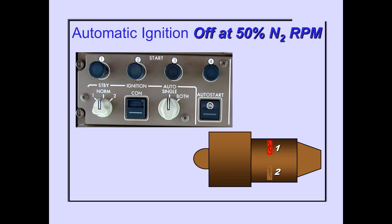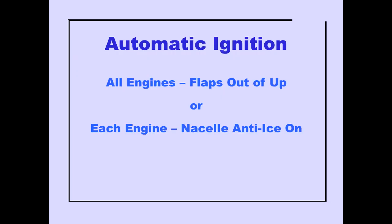Automatic ignition occurs during the engine start cycle until the selected igniter shuts off at 50% N2 RPM. Automatic ignition occurs for all engines when flaps are out of the up position, and for each engine that has nacelle anti-ice on.